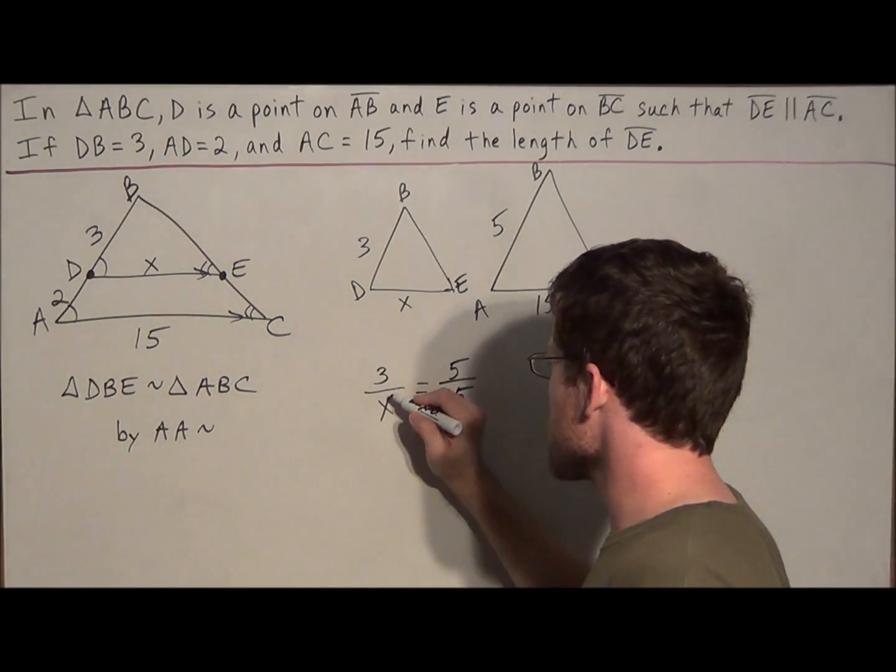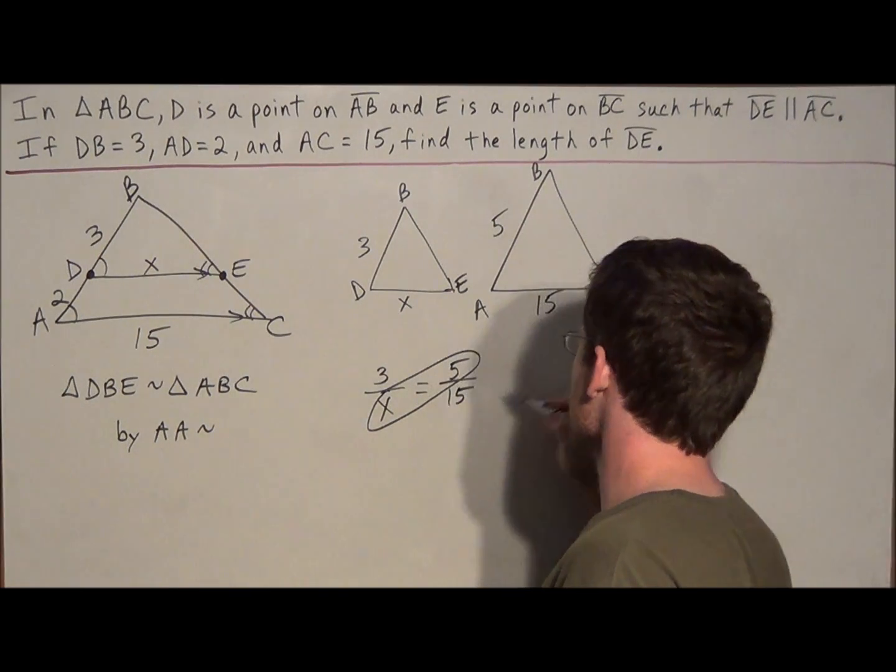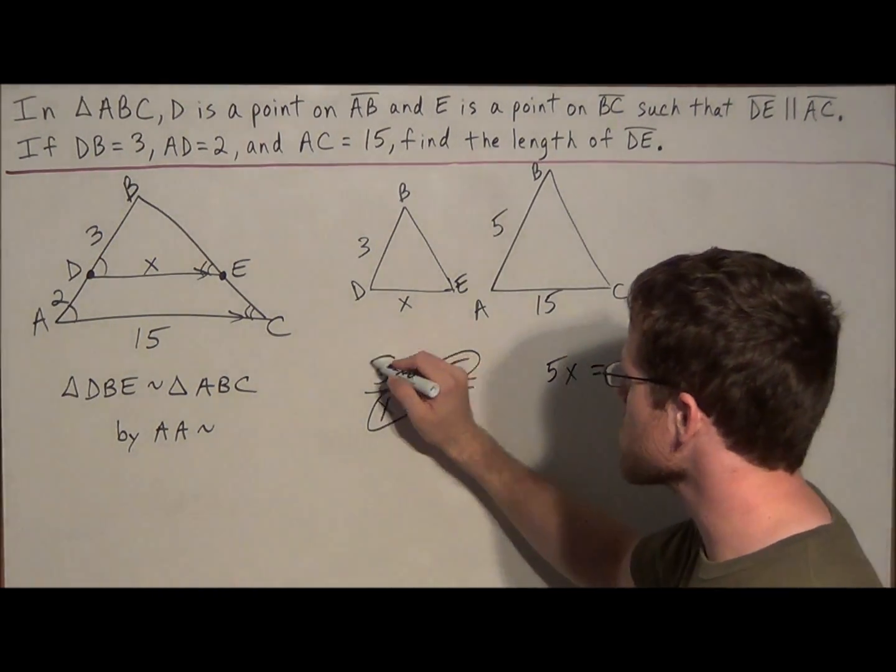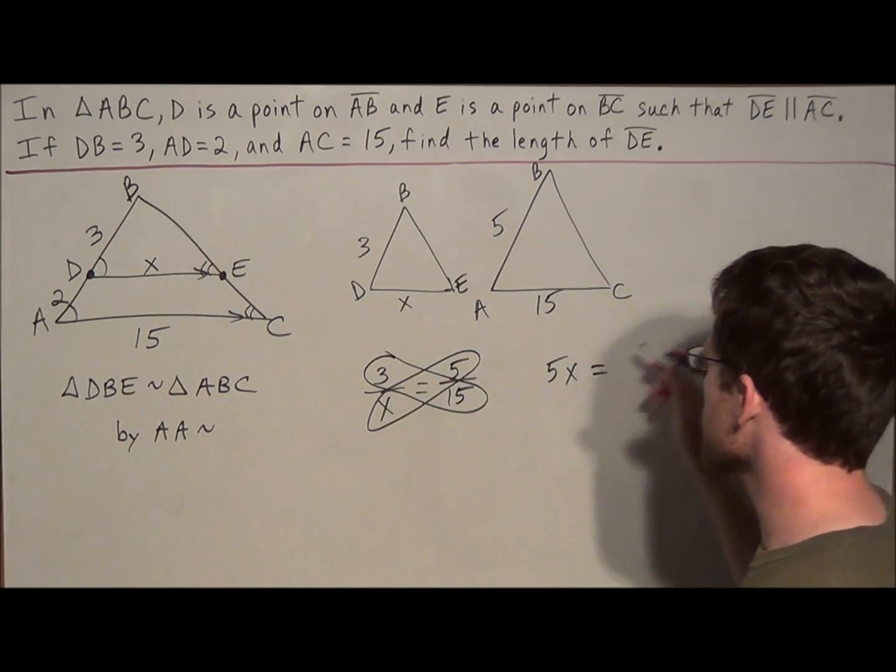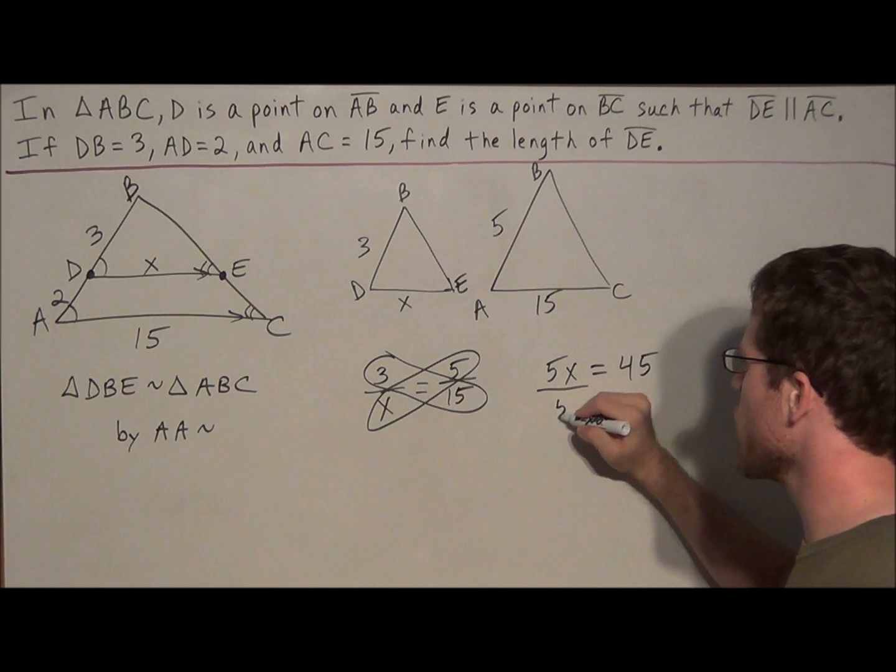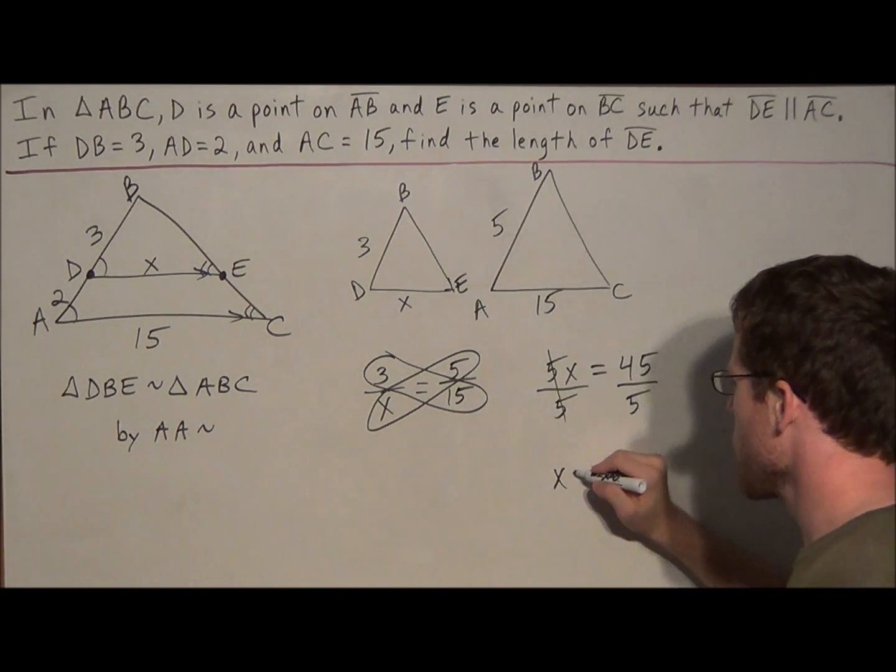Now at this step, all we need to do is cross multiply. So we have 5 times X is 5X equals, and we're multiplying 3 times 15, which is 45. So now to solve for X, we just divide both sides by 5, and we can find that X equals 9.